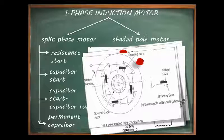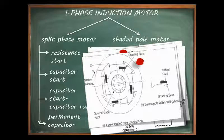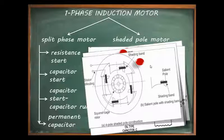Arrangement is made such that the flux set up by the shaded pole lags behind the flux set up by the main pole, producing a phase split and thus a rotating magnetic field, even though the split in phase is not a perfect 90 degrees.